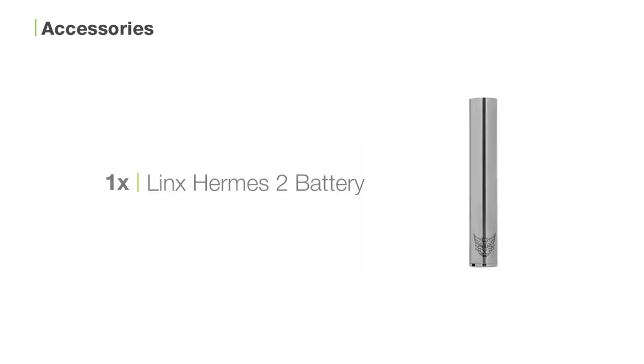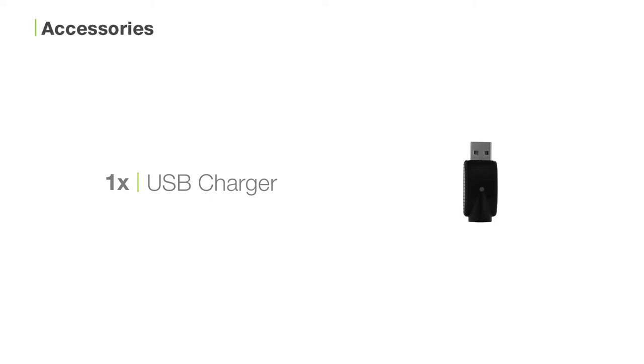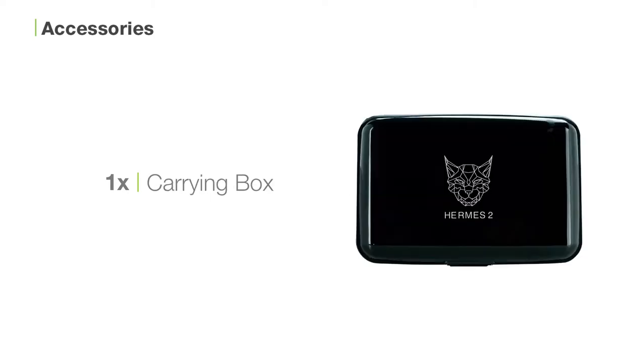Inside the box you'll find one Lynx Hermes II battery, one Lynx Hermes II atomizer, one USB charger, and one carrying box.